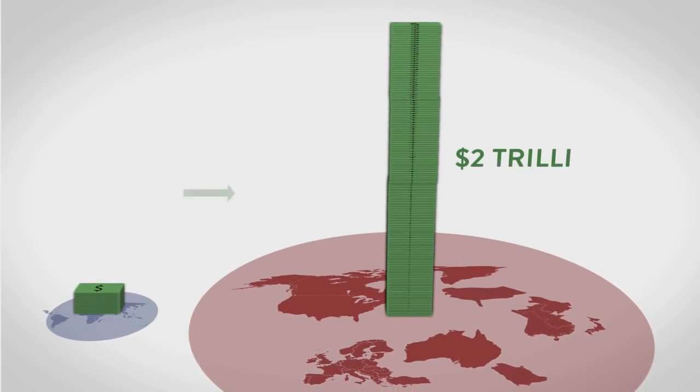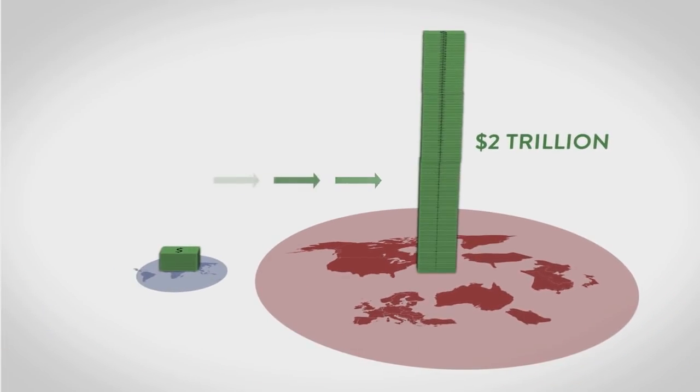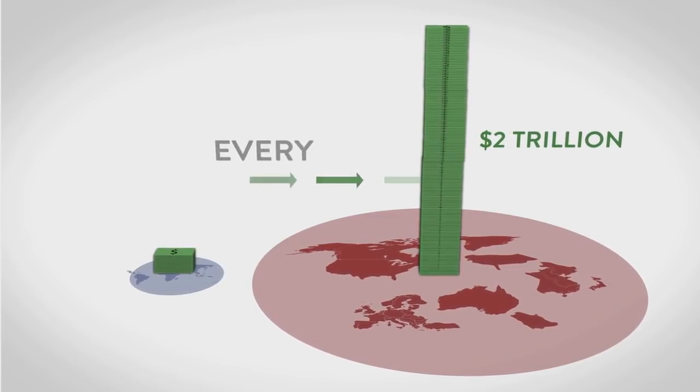Altogether, that's more than $2 trillion that flows from some of the poorest parts of the world to the richest. Every year.